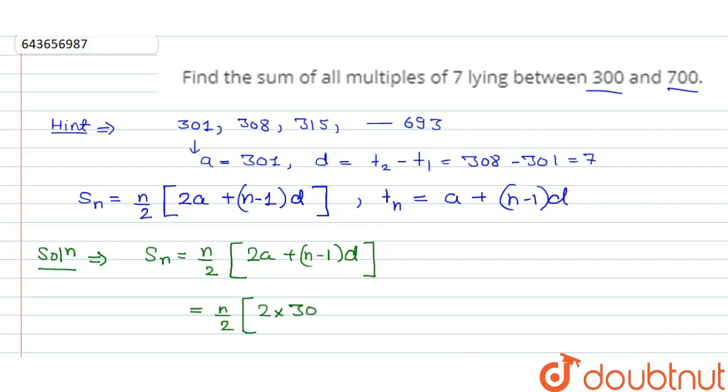The value of 2 into a is 301 plus n, the value of n we don't know. d is 7. So Sn = n/2[602 + (n-1)7]. Consider this equation as equation 1.